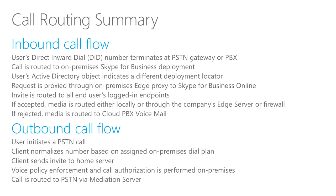For the outbound call flow, a user wants to dial a PSTN number. The client first normalizes the number based on the assigned on-premises dial plan — if the user dials without country code, a dial plan normalizes it to a full E.164 number. The invite is then sent via Office 365, through the signaling channel, through the federation edge server to the front-end. There, the voice policy is checked to determine if the user is permitted to call that phone number. The check is done on-premises, and from there the call is routed to the PSTN.